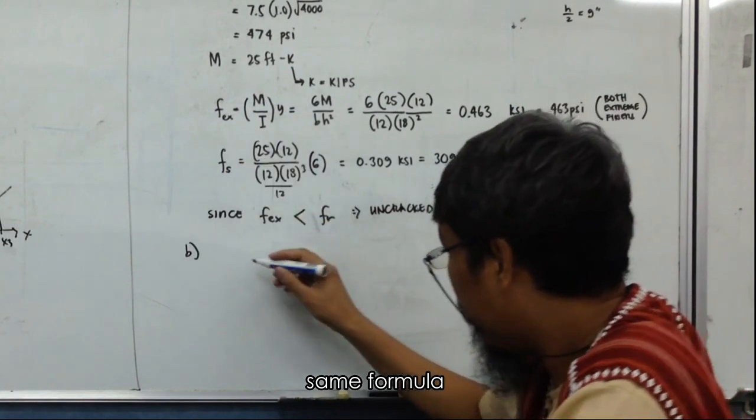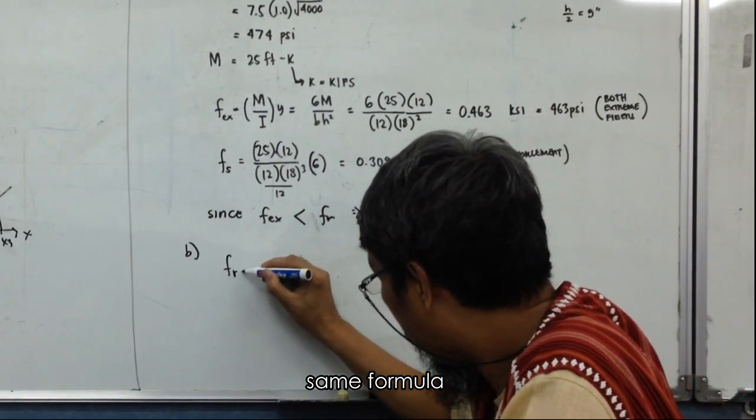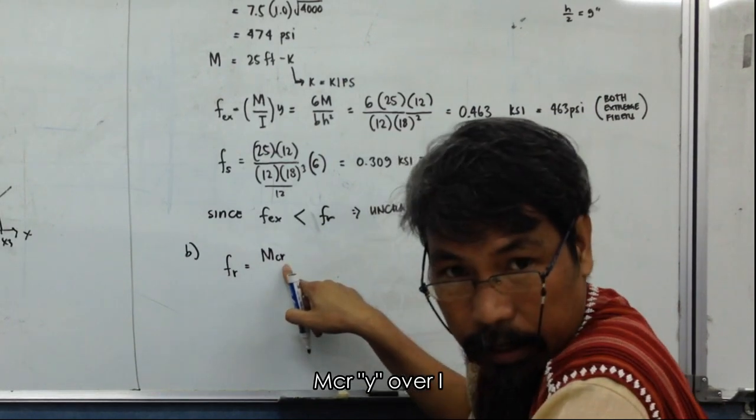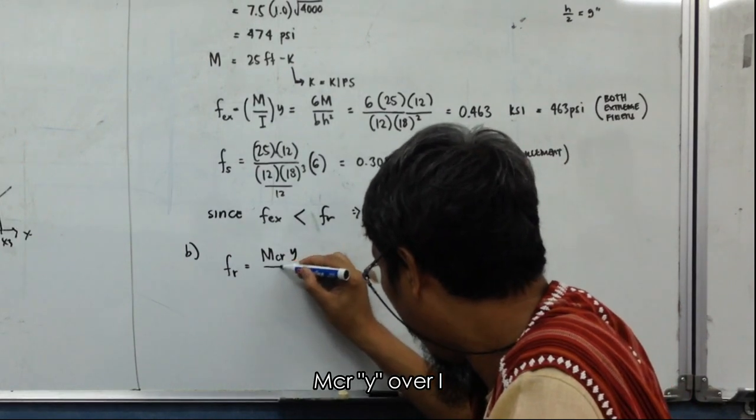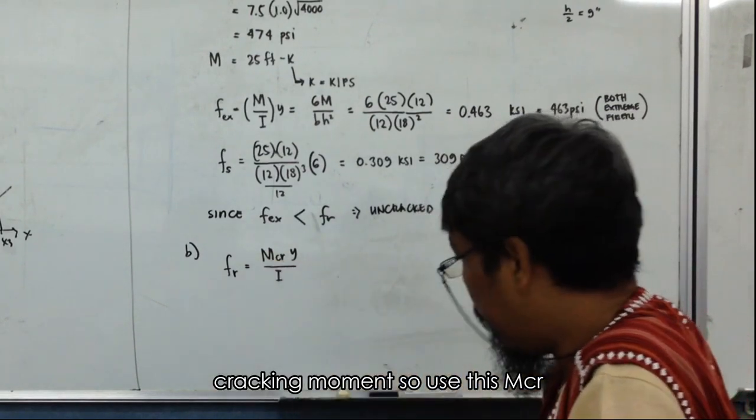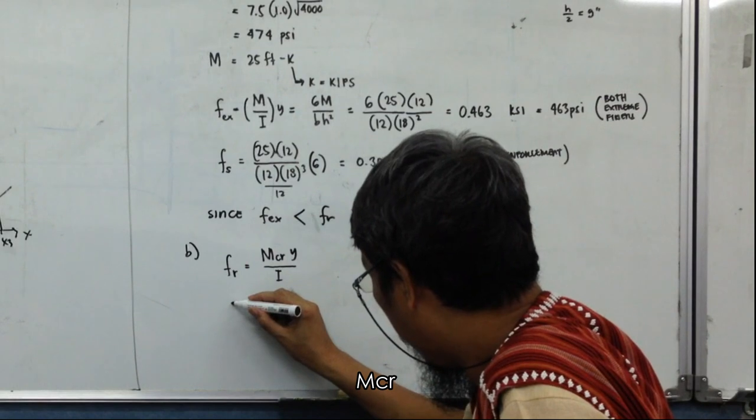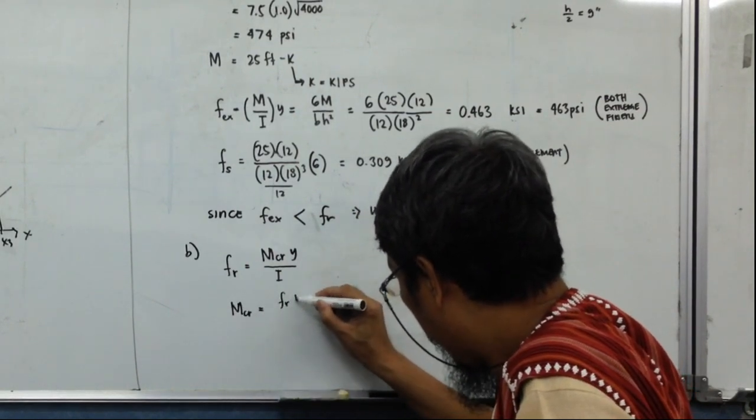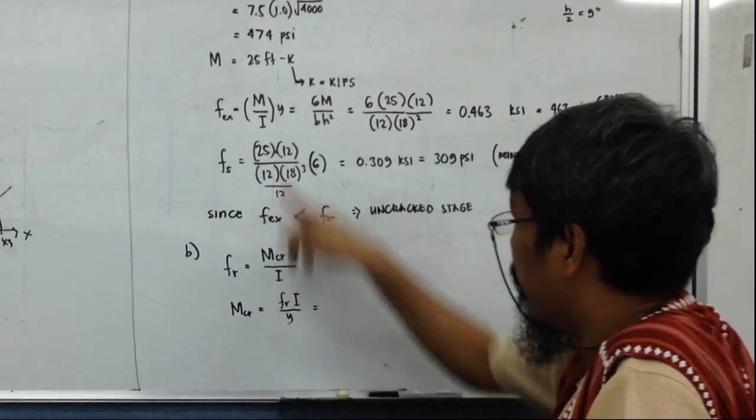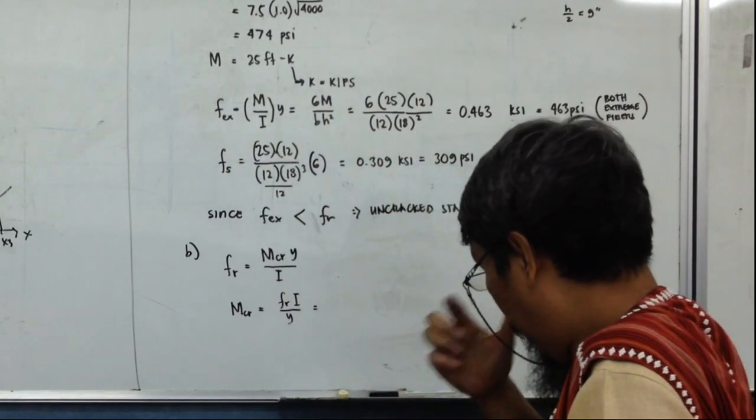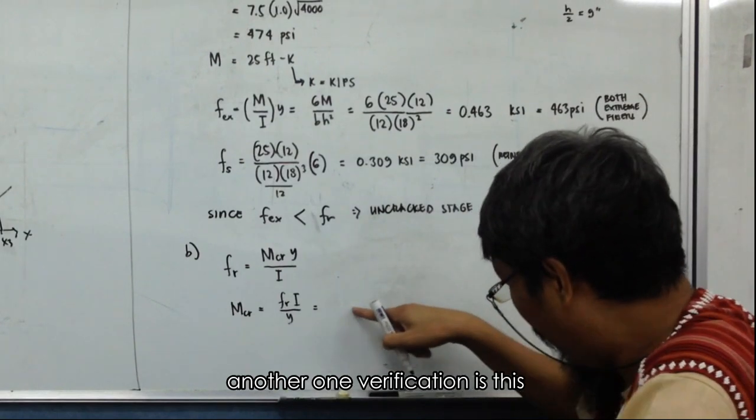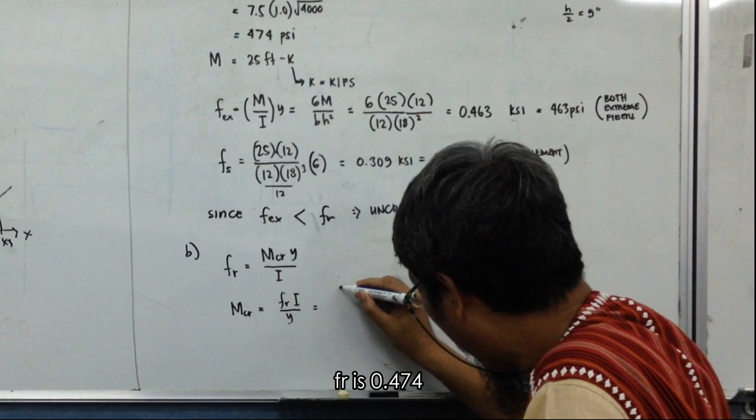Same formula. We will find the M_CR. M_CR equals F_R times I over Y. So cracking moment, we will use this M_CR. So M_CR, we already know F_R, so this is F_R.